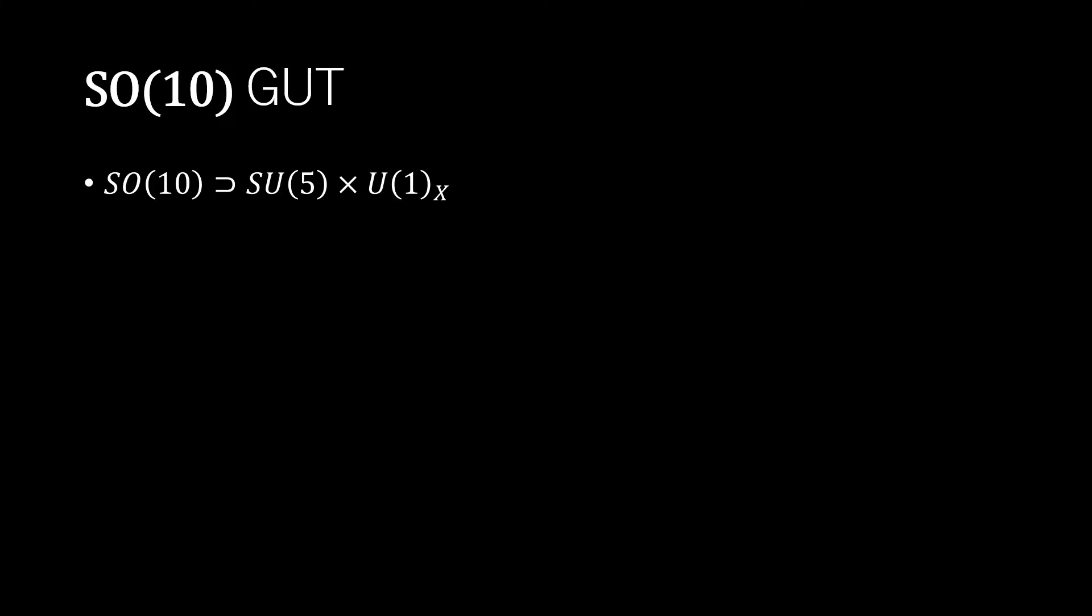The smallest simple Lie group containing the standard model gauge group SU(3) × SU(2) × U(1) is SU(5). A further extension of the SU(5) GUT model is the SO(10) GUT model.